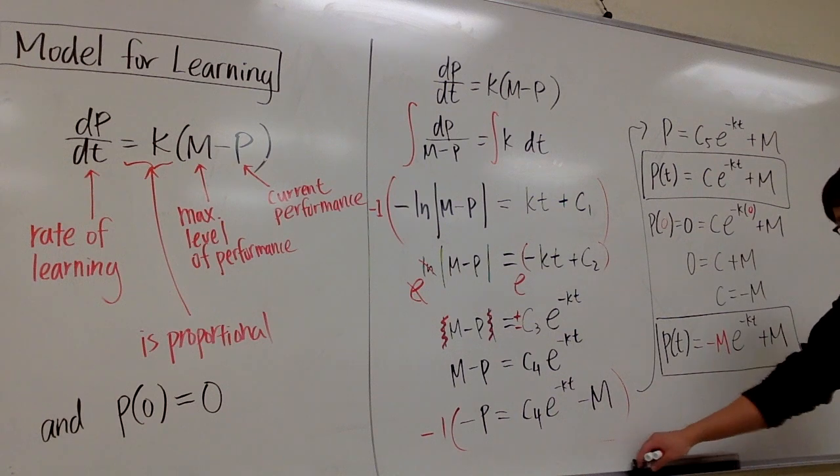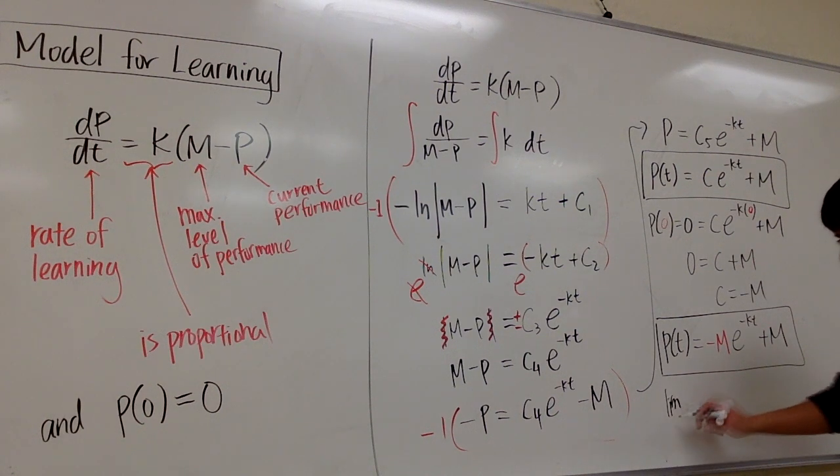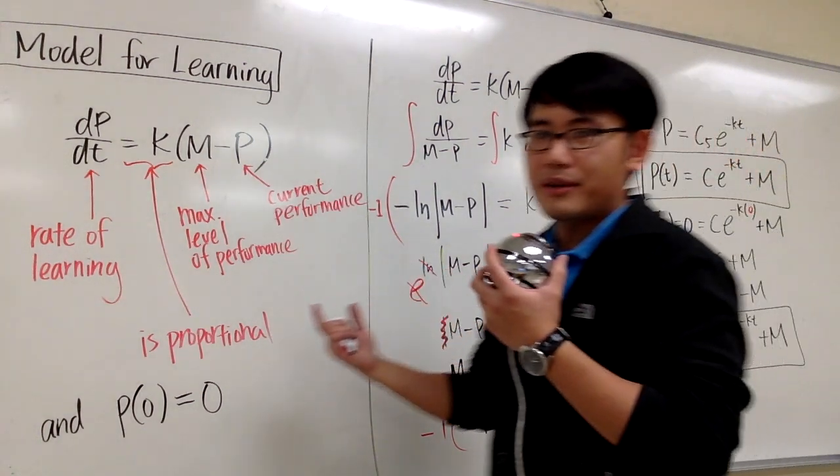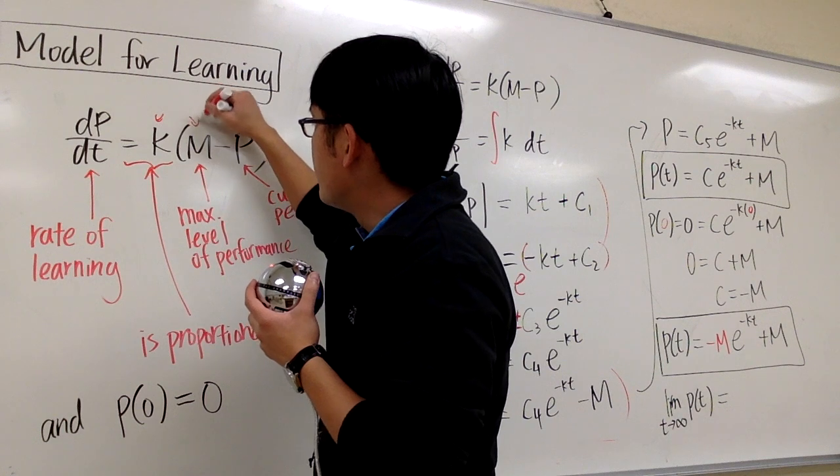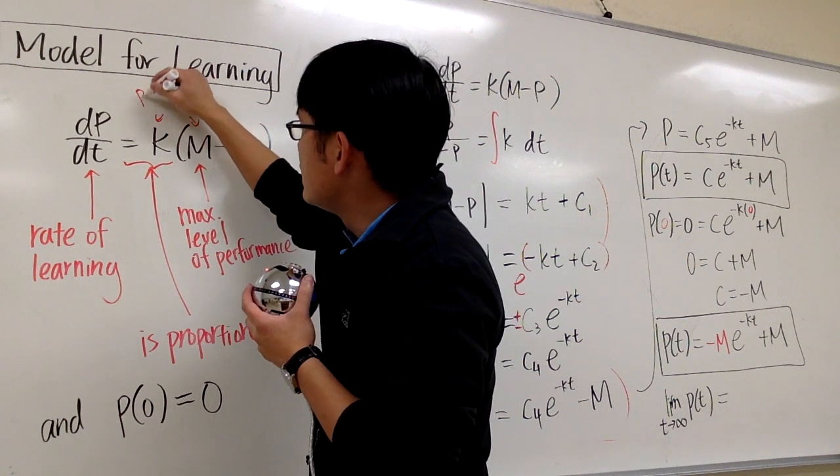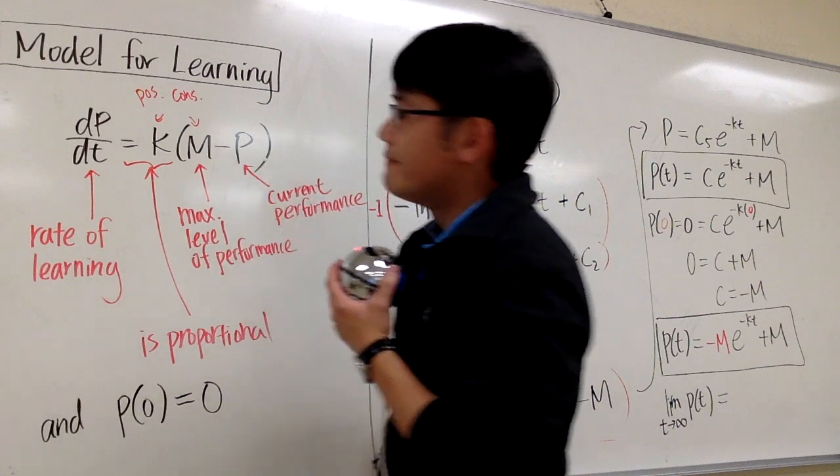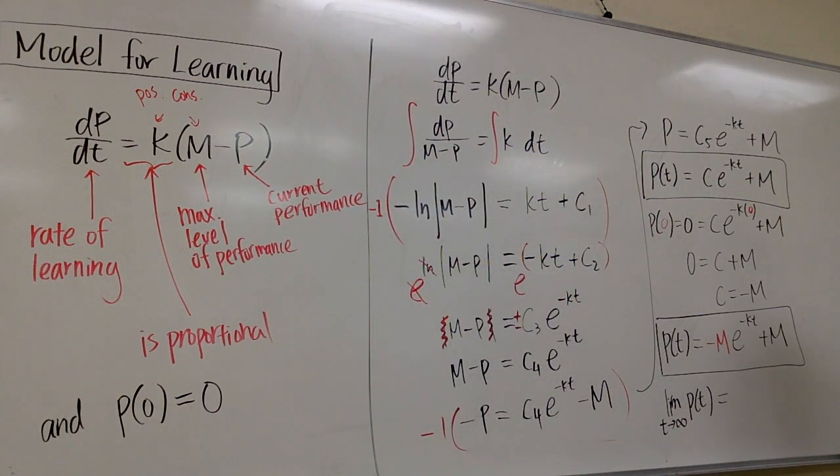And also, we'd like to take a look, what happens if we take the limit as t goes to infinity of my learning curve. Well, first of all, I shall have to come back here. This k and this m, in fact, they are both positive constants. So, if we have t is approaching infinity, we plug it into here, e to the, technically, we will have negative infinity, this term will go to 0, and the only thing left is m.